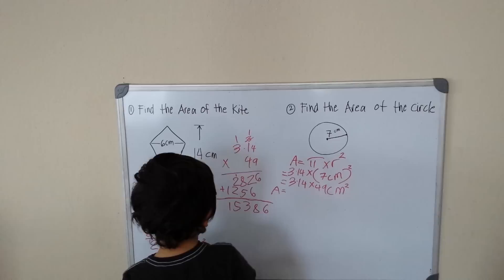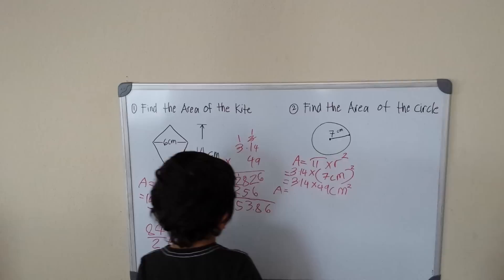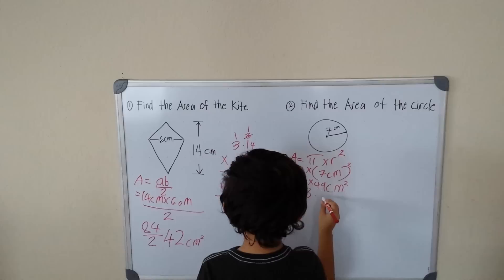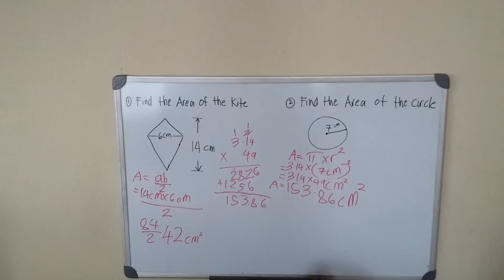Okay, 1, 2, 1, 2, 153.86. So my area is 153.86 cm2.